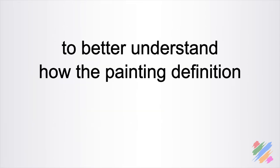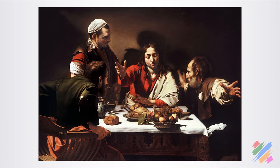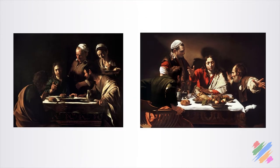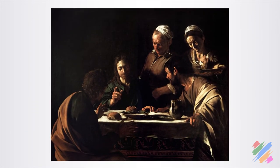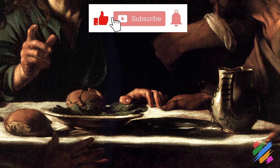To better understand how the painting definition is going to affect our final work, let's look at this other painting we can admire in London at the National Gallery. This is another Caravaggio's representation of the Supper at Emmaus that the artist made five years earlier. Although they are both based on the same idea, they are very different. The light in both paintings comes from the top left side, but the first is a very dark scene — we can't actually see what's on the background because it's really dark, while in the second we can see the wall and the shadows.